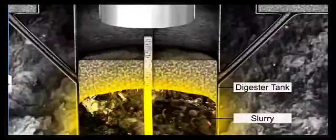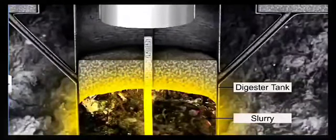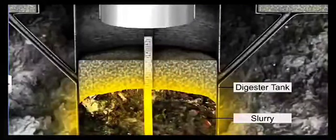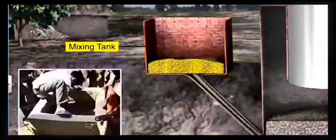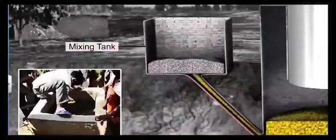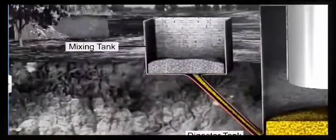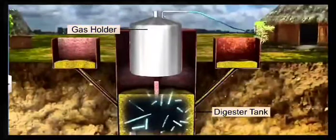For this, a pit of about 10 to 15 feet has to be dug which has to be lined by bricks. Then the cow dung is first mixed with water in the mixing tank and a slurry is made. This slurry goes into the digester.